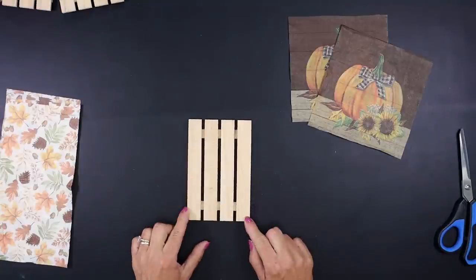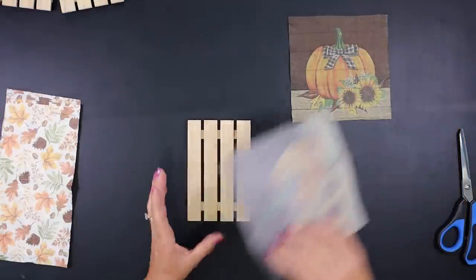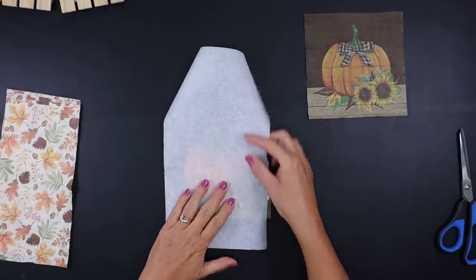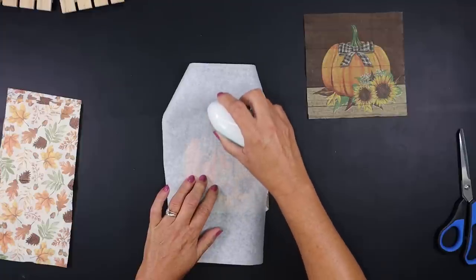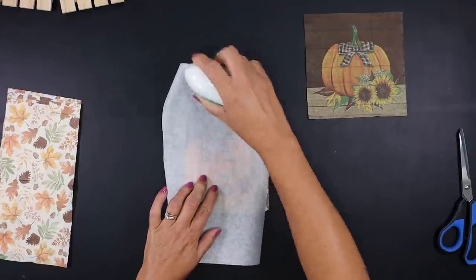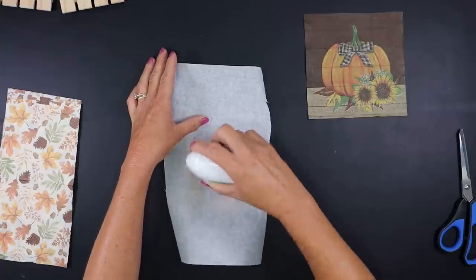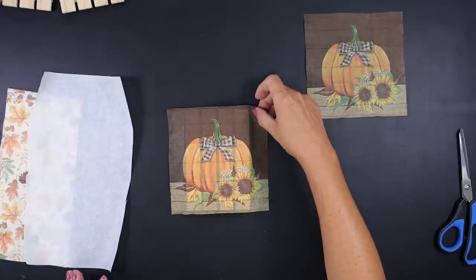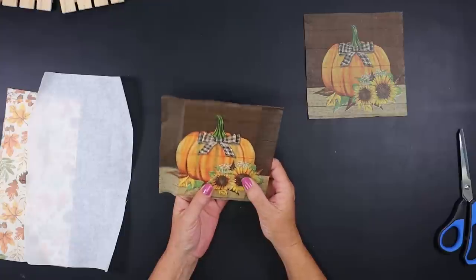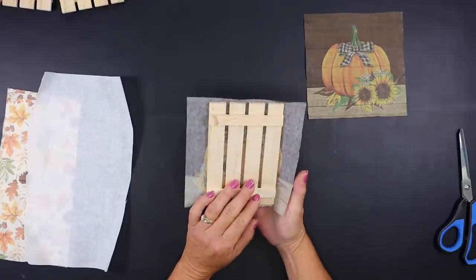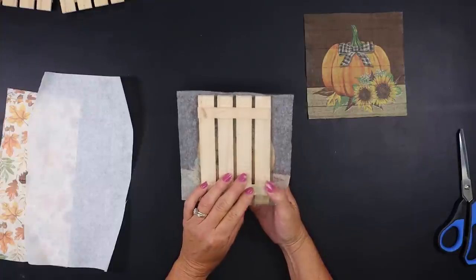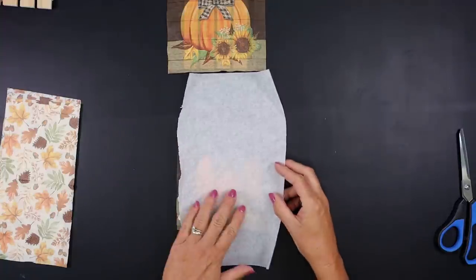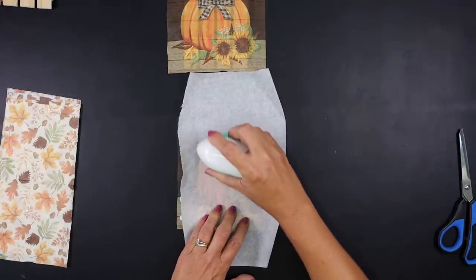Now that our Mod Podge has dried on our pallets we're going to place one of the napkins and center that on top of the palette. Add a piece of parchment paper and gently iron over top of this to reactivate that Mod Podge. Make sure that you get all of the edging so that it will not tear or rip. We're going to set that to the side and let it cool down and we're going to do each individual palette. So we will have two of the pumpkin ones and then two of the ones with the leaves and pine cones.